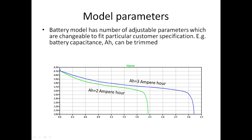The model cell has a lot of changeable parameters. The first parameter we can adjust is capacitance — we can set 3 ampere-hour or 2 ampere-hour capacitance, and accordingly we get a longer or shorter discharge curve, as you can see on screen.